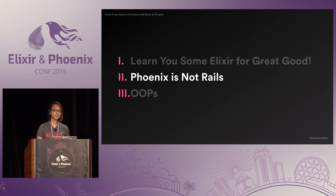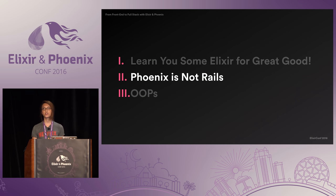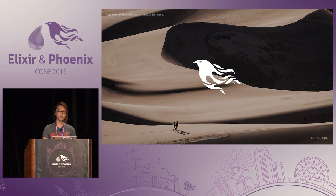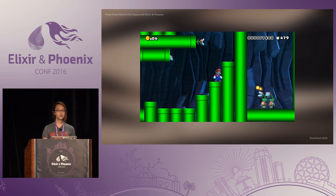Now on to Phoenix. I titled this section 'Phoenix is not Rails' because it's easy to be tempted to write a Phoenix app the same way you would a Rails app. But it's often better to start with a fresh perspective, especially when going from an object-oriented language to a functional one. Once you're familiar with the basic building blocks of Elixir, Phoenix is a lot easier to pick up — after all, it's just an Elixir library. Phoenix takes the Elixir concepts we've learned and expands upon them, and I'll use a Phoenix API as an example to explain what I mean.